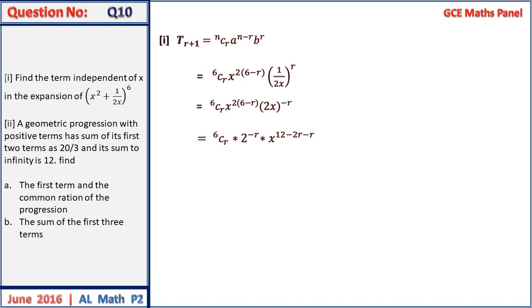Now the term independent of X will be given by this x value being equated to x to the power 0. From here we can equate the powers and solve for r, which gives us a value of r equal to 4.